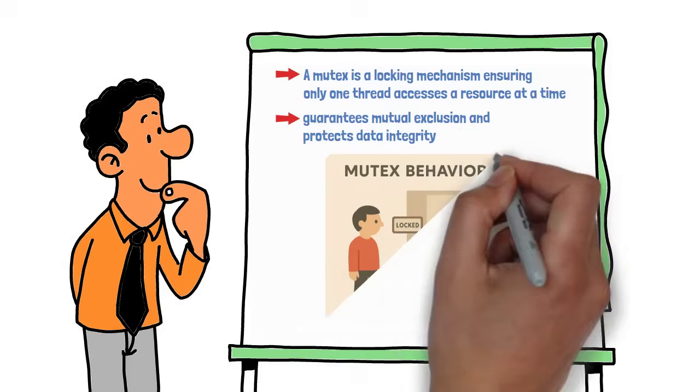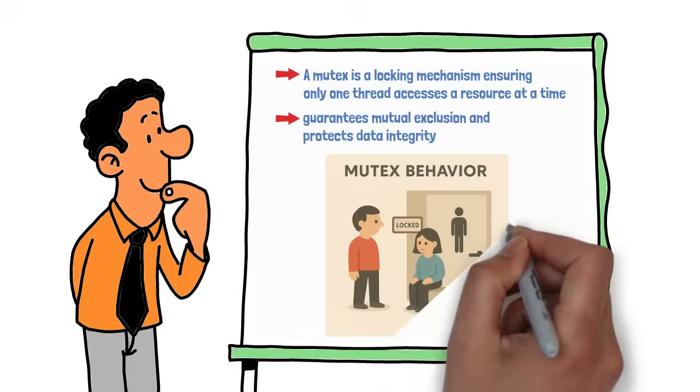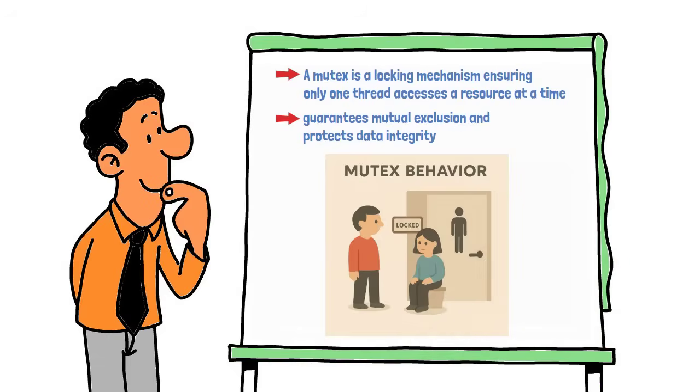It's like a single-key bathroom where only one person can enter at a time. When someone goes in, they lock the door, acquire the mutex. Others must wait until that person exits and unlocks the door, releases the mutex, before entering themselves.